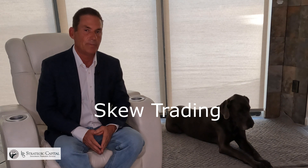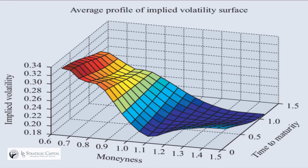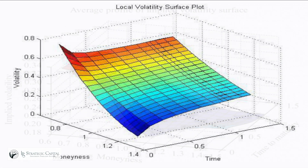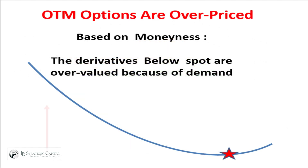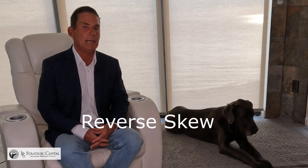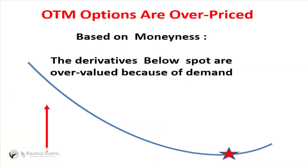Oswald wants to talk today about the reverse skew — that options trading below spot are trading in more demand, or at higher implied volatility, than options trading at the money. We call that a reverse skew. Equities tend to trade in a reverse skew most of the time, especially when markets become extremely volatile. The skew below strike can get extremely steep.